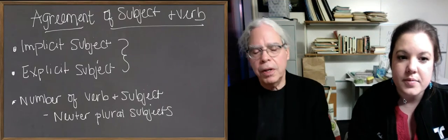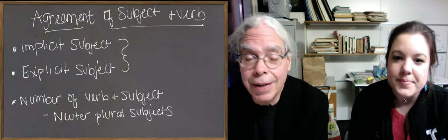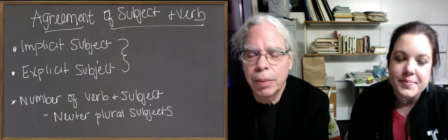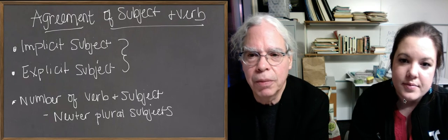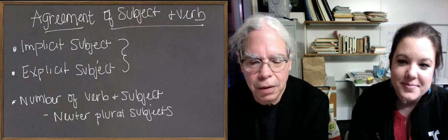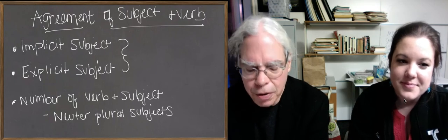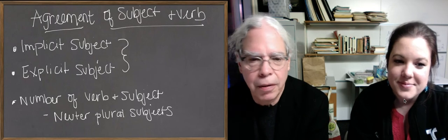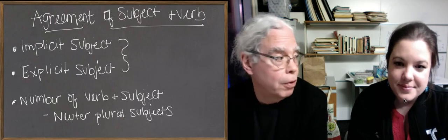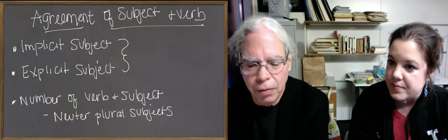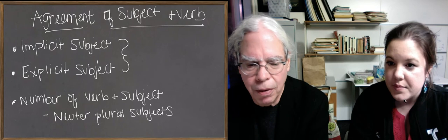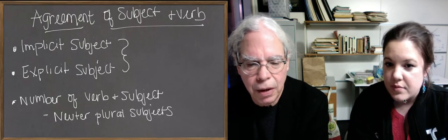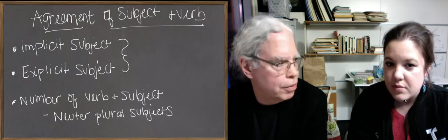Okay, we have three things that we want to talk to you about today. We want to talk to you about the agreement of subjects and verbs in Greek first, and then we're going to talk about the infinitives, how you form them and what they mean in Greek. We're going to talk about present and aorist infinitives. We'll talk about why they're called those in a moment too. And then lastly we're going to talk about how to make questions in Greek.